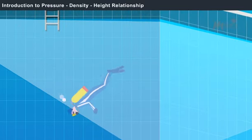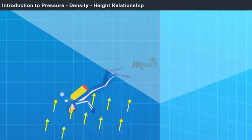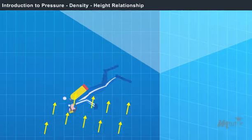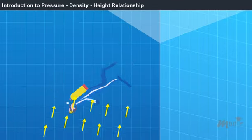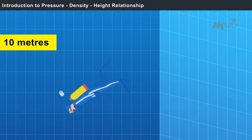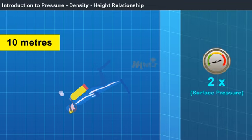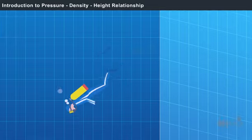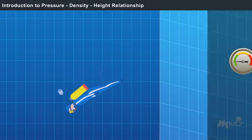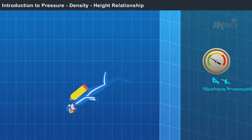Have you ever dived into a deep swimming pool and felt the increase of pressure on your ears? This happens due to the force of water gushing on your eardrums with great pressure. When you dive deep into the water, the pressure you feel on your ears is twice as the pressure created at the surface. This will be thrice at the depth of 20 meters and four times at the depth of 30 meters and so on.